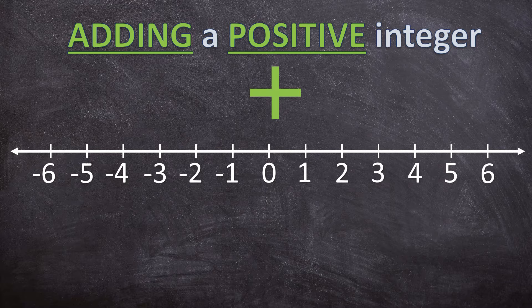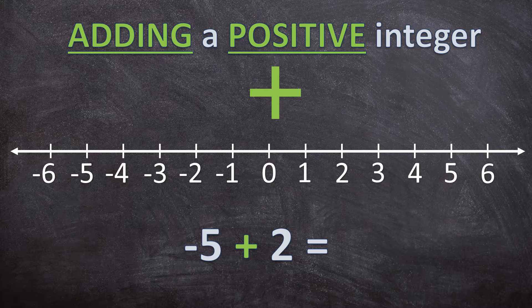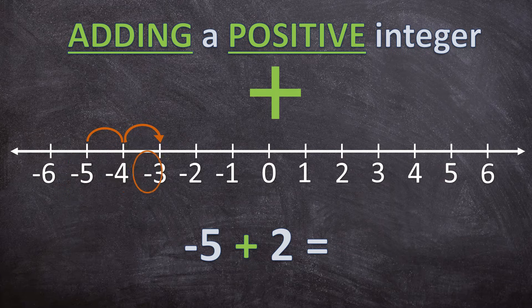Let's look at another example: negative 5 plus 2. 2 is a positive integer, so it just stays as negative 5 plus 2. Let's look at it on the number line — negative 5 plus 2 will give me negative 3.